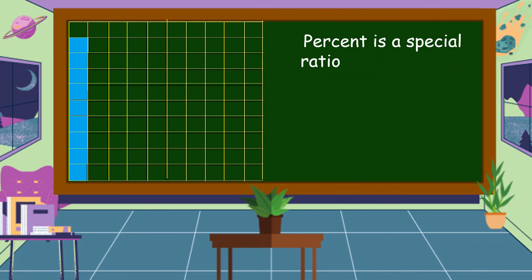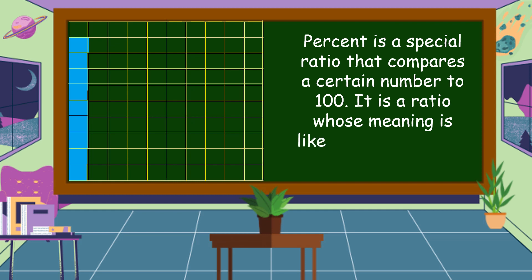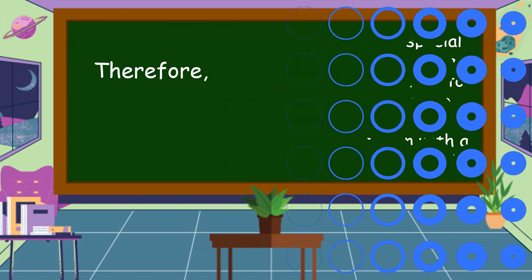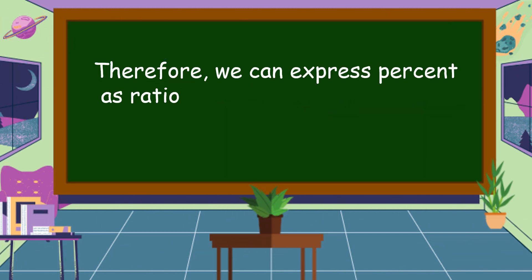What do we mean by percent? Percent is a special ratio that compares a certain number to 100. It is a ratio whose meaning is like a fraction with a denominator of 100. Therefore, we can express percent as a ratio, fraction, or decimal number, and vice versa.